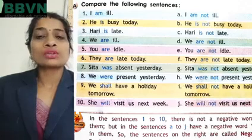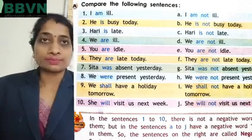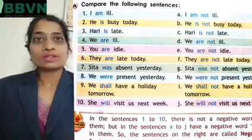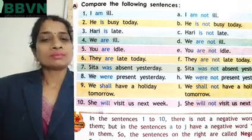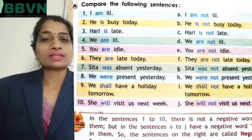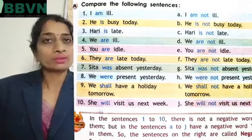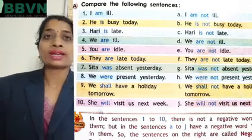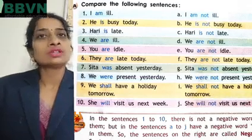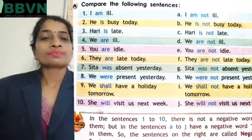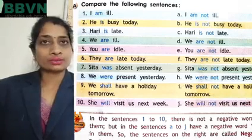So students, now you have seen ki one se leke ten tak jo sentences hain, un mein 'not' nahi hai — they are simple sentences. And in the sentences from A to J, wahaan par humne unhe negative banaya hai. And negative banate hain humne kya word? We have just added the word 'not.'